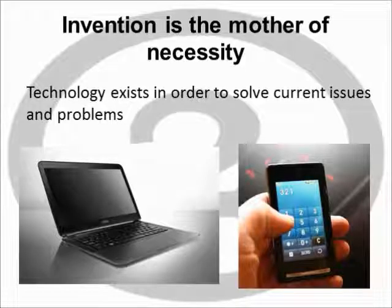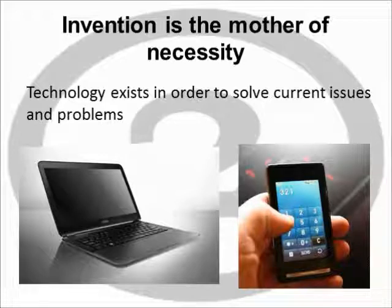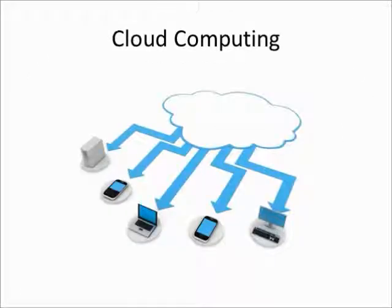Kranzberg's second law is that invention is the mother of necessity. Inventions are created in order to solve problems — computers were created to automate tasks that humans are bad at, like tabulating ballots and running Excel data sheets. Cloud computing is another example: it involves storing information and programs on servers not located near your device. When internet speeds got fast enough, we could stream music, stream movies, and use applications that existed only on the internet.